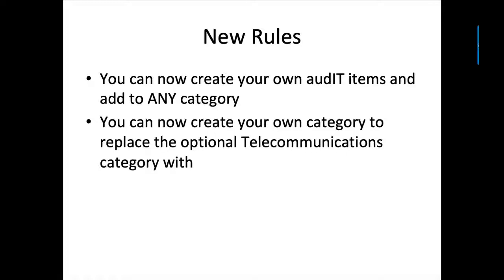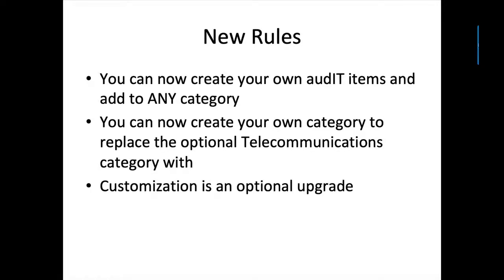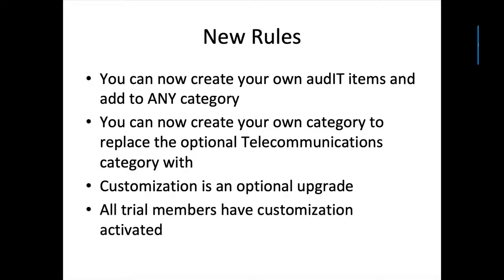You can now create your own category, and as of this recording, you can use it to replace the optional telecommunications category — turning that fourth optional category into anything you'd like. Customization is an optional upgrade, so if you're happy with what we've created, you can use audit without it and save a little money. All trial members have customization activated so you can try it out and decide whether to keep it. As your trial expires, you can click the downgrade button and we'll remove it so you don't get charged.